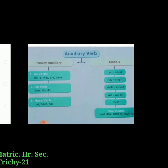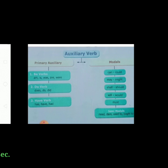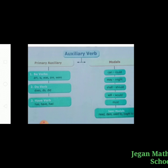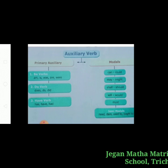Auxiliary verbs are divided into two categories: primary auxiliaries and modal auxiliaries. Primary auxiliaries are the forms of the verbs to be, to have, and to do. Modal auxiliaries are: shall, should, will, would, can, could, may, might, and must.